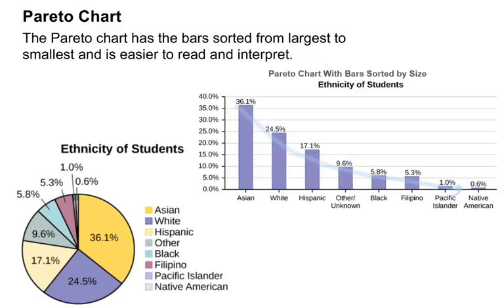A Pareto chart is another type of graph that organizes things in descending order — from high to low, so it's easy on the eye. A pie chart is actually a Pareto chart, and it goes counterclockwise, starting at the 12 o'clock position. This one is organized with percentages, nice labels, and is very clean to read.